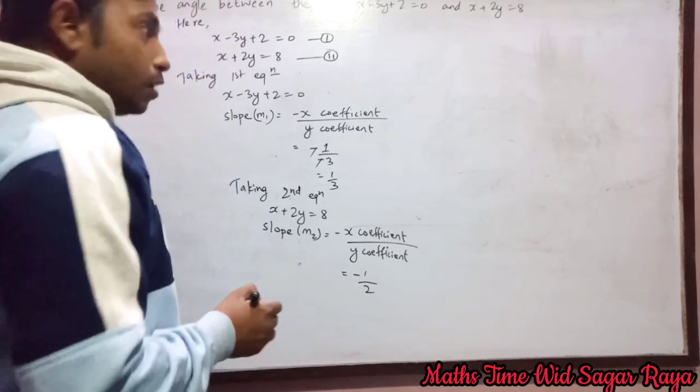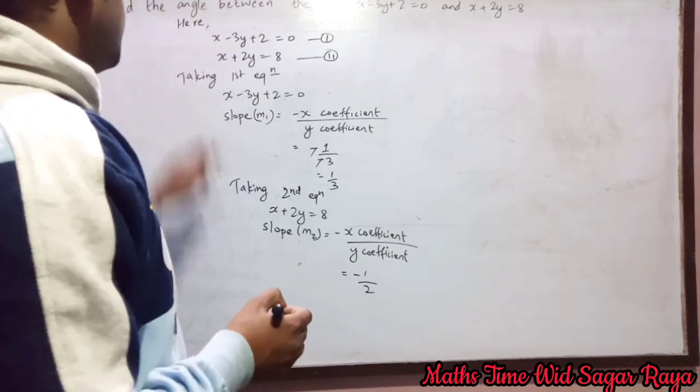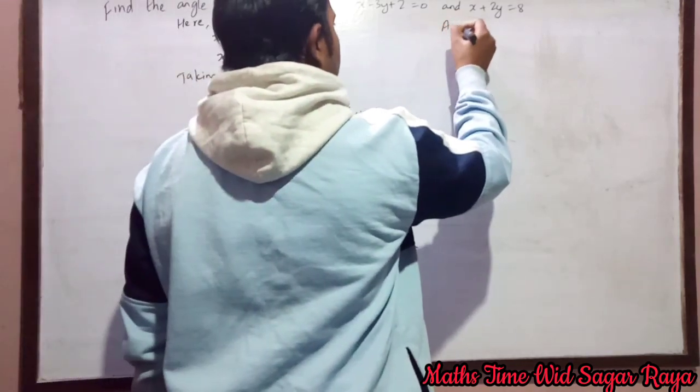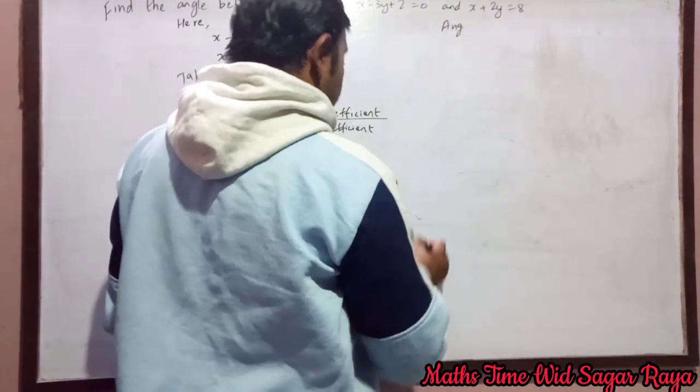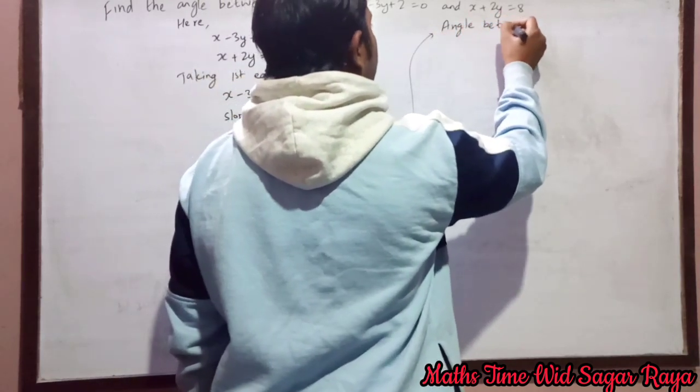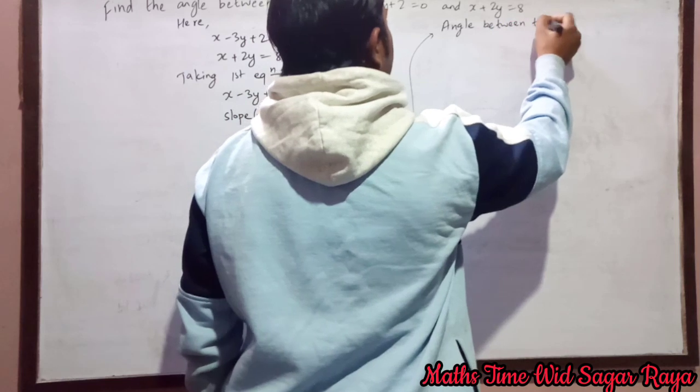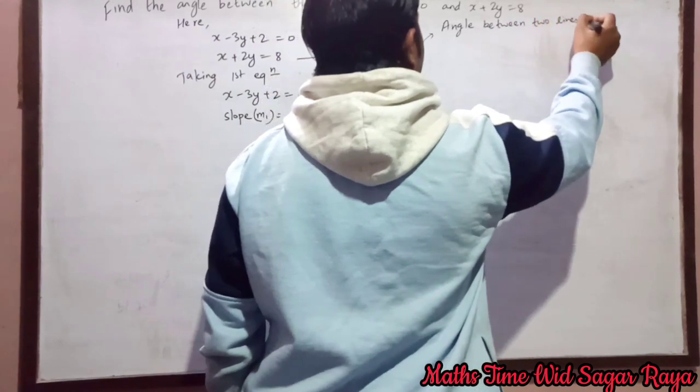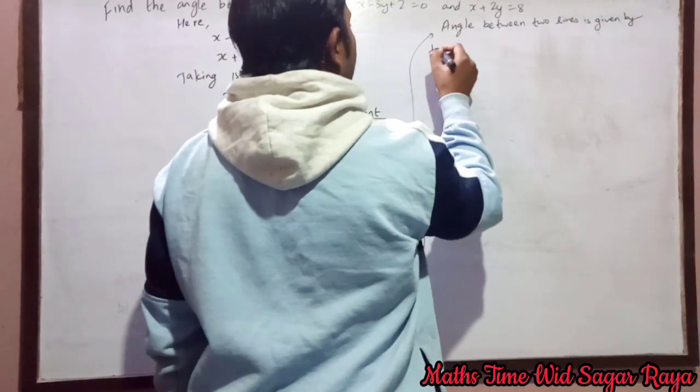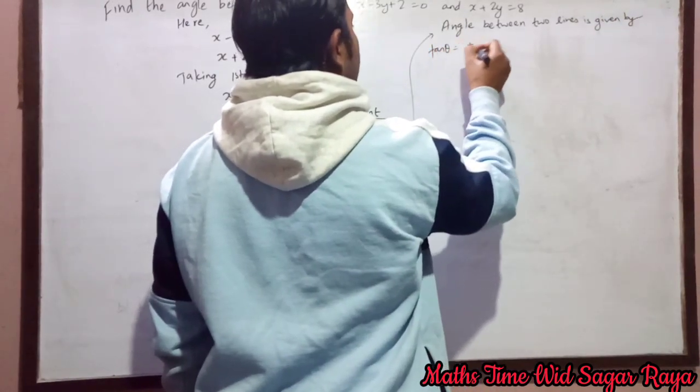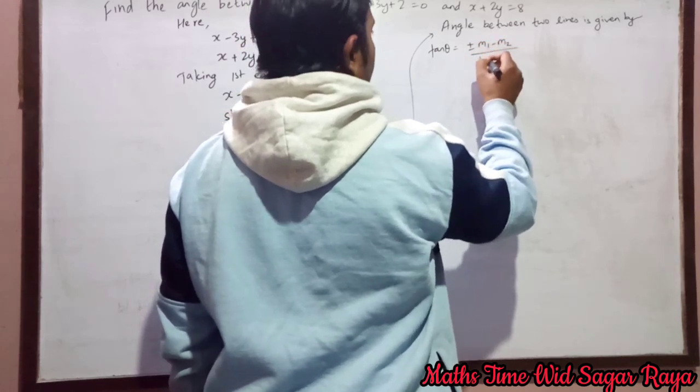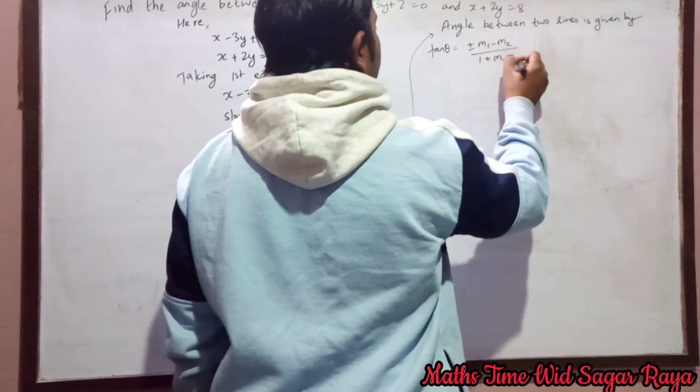Okay, now let's use the formula to find angle between two lines. So angle between 2 lines is given by tan θ equals plus minus m1 minus m2 by 1 plus m1 dot m2.